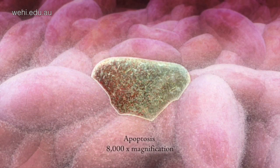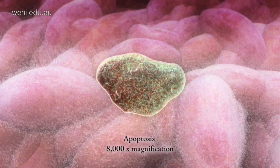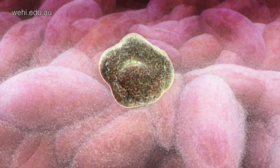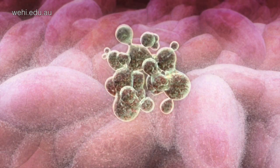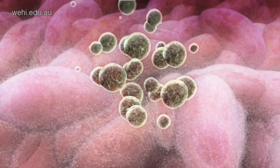Programmed cell death, which is also known as apoptosis, is a process by which the body gets rid of cells that it doesn't need or that might be dangerous. It needs to do this to make sure that the number of cells doesn't get out of control, such as in cases of cancer, or to get rid of cells that are dangerous, such as virally infected cells.